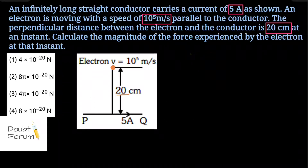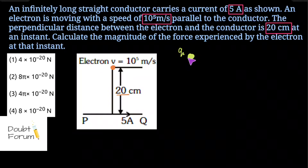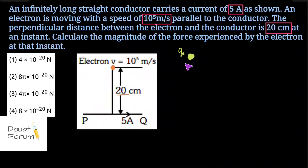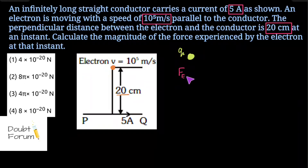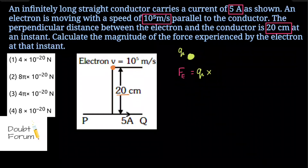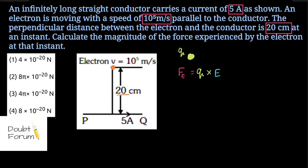An electron is a charged particle. Suppose this is a charged particle with magnitude of charge Q. Any charged particle can experience force due to the presence of an electric field as well as a magnetic field. The force experienced by a charged particle due to an electric field, denoted Fe, is equal to charge Q multiplied by the magnitude of the electric field. The direction of this force is in the direction of the electric field.